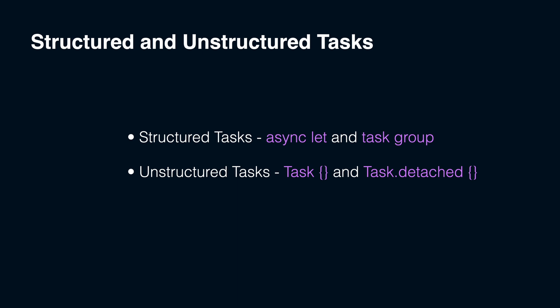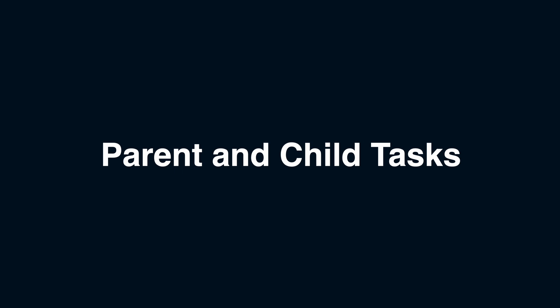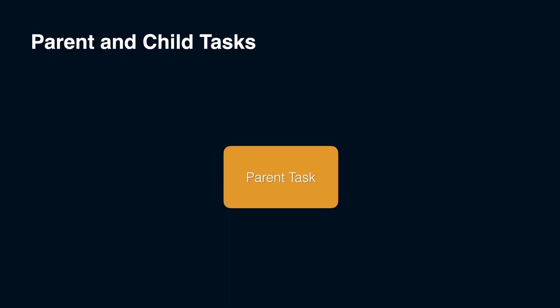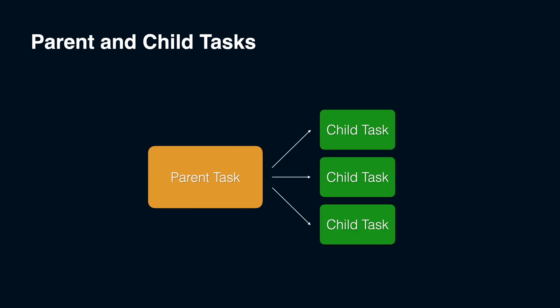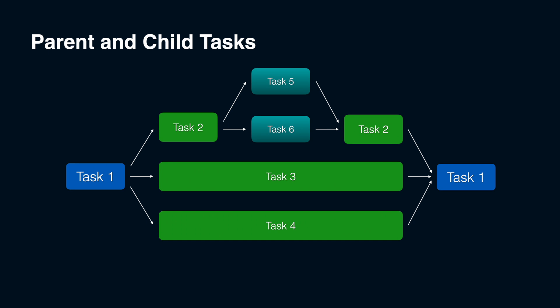To understand the difference, we need to understand the parent and child relation for tasks. There are parent and child tasks in structured concurrency. A parent task is a task that spawns one or more subtasks, also called child tasks. The parent task is responsible for managing its child tasks. A child task is a subtask created within the context of a parent task. Parent and child tasks together form a task tree structure that simplifies control over related tasks, completion, cancellation, and resource management. A root task is the initial task in the task tree, also called a root node, which can be a parent if it spawns child tasks.